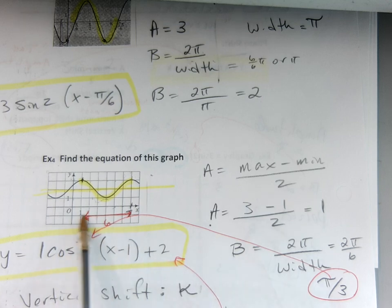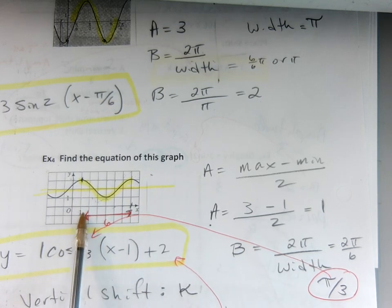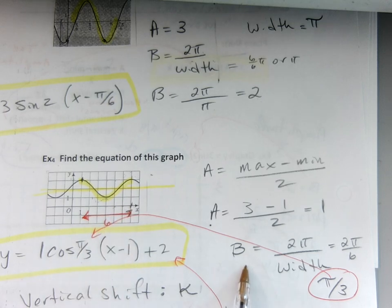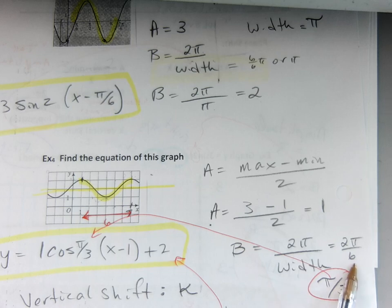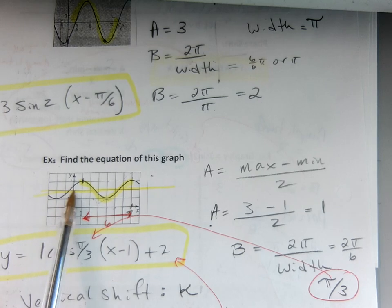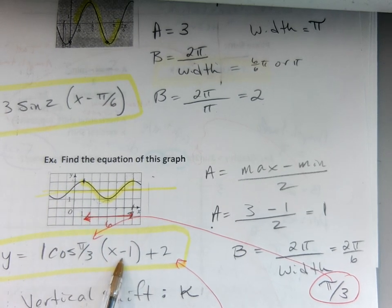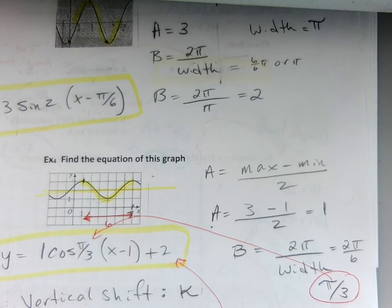Now the width of this curve is, well, let's see, it's 1, 2, 3, 4, 5, 6. So the b, or the frequency, is 2π divided by the width. Well, the width is 6. So we reduced it, and b then is π/3. Let's put π/3 there. The graph did get shifted forward or to the right one. And then the whole curve got shifted up 2.